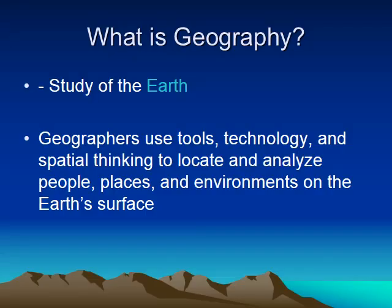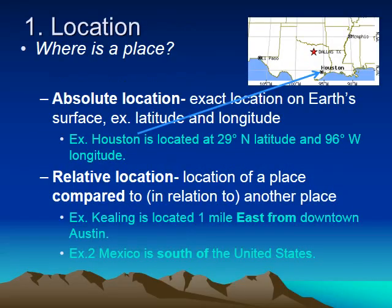The first element of geography is location. Location is simply asking, where are you in this world? We have two ways to describe your location. The first is absolute location, which you already learned about since we talked about longitude. It's simply telling us your exact location on the Earth's surface using latitude and longitude. It doesn't have to be your location — it can just be a location that you're studying.